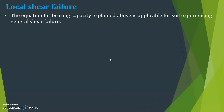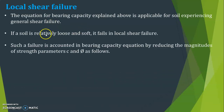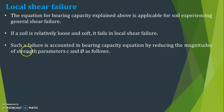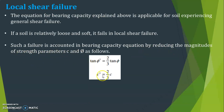The equations discussed so far are applicable for general shear failure. If there is a local shear failure, the bearing capacity equation is slightly different. When a soil is relatively loose and soft, it fails in local shear failure, and this is accounted for in the bearing capacity equation by reducing the magnitudes of strength parameters c and φ.